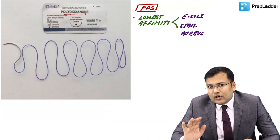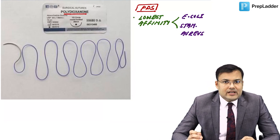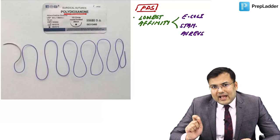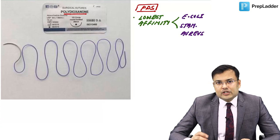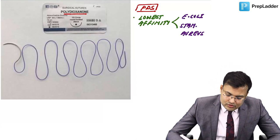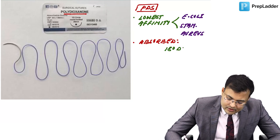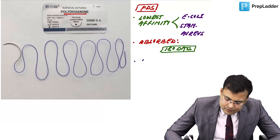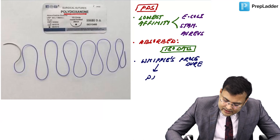PDS is specifically used at pancreaticojejunostomy during the Whipple procedure because this anastomosis carries the maximum risk of anastomotic leak. PDS is absorbed in 180 days.